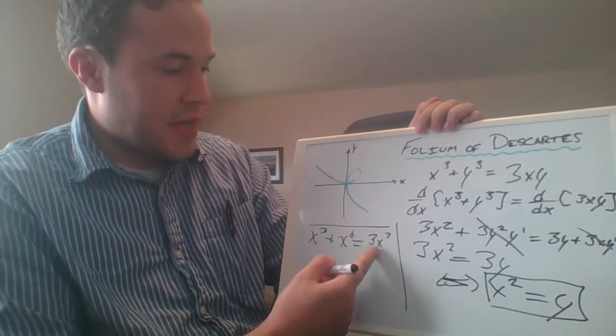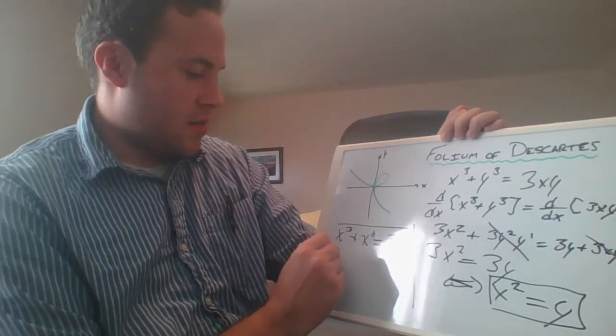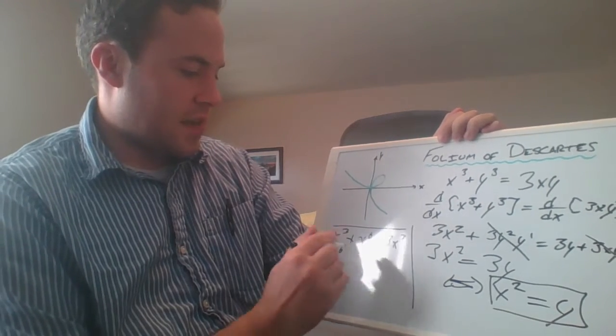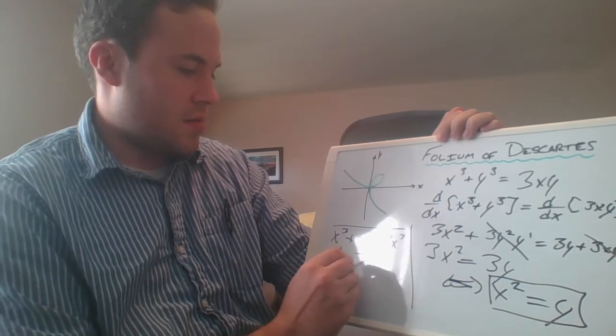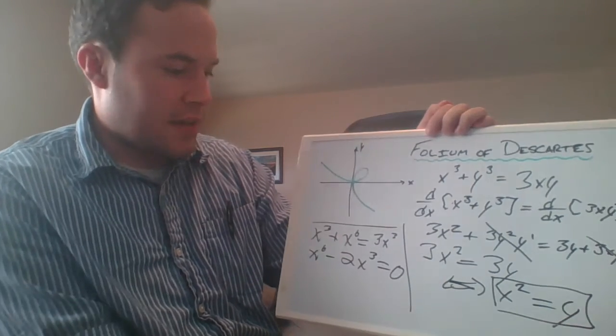Now we've got 3x cubed on the right hand side and an x cubed on the left hand side. Let's gather those together, so we get x to the sixth minus 2x cubed is equal to zero.